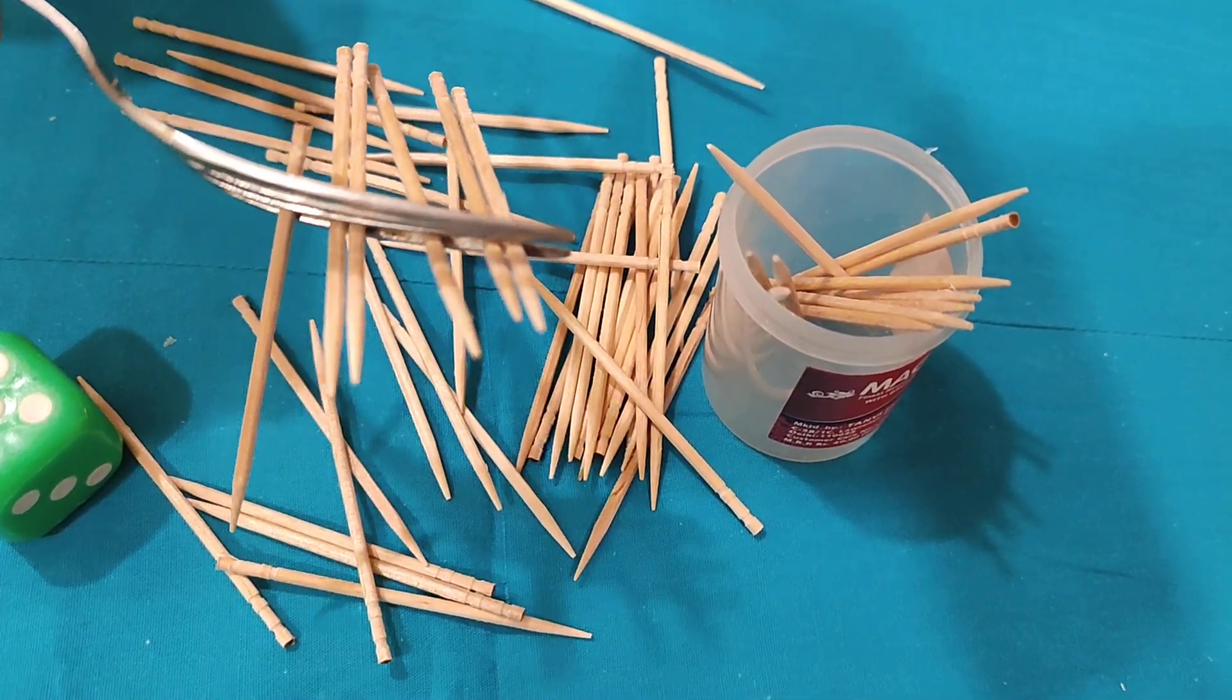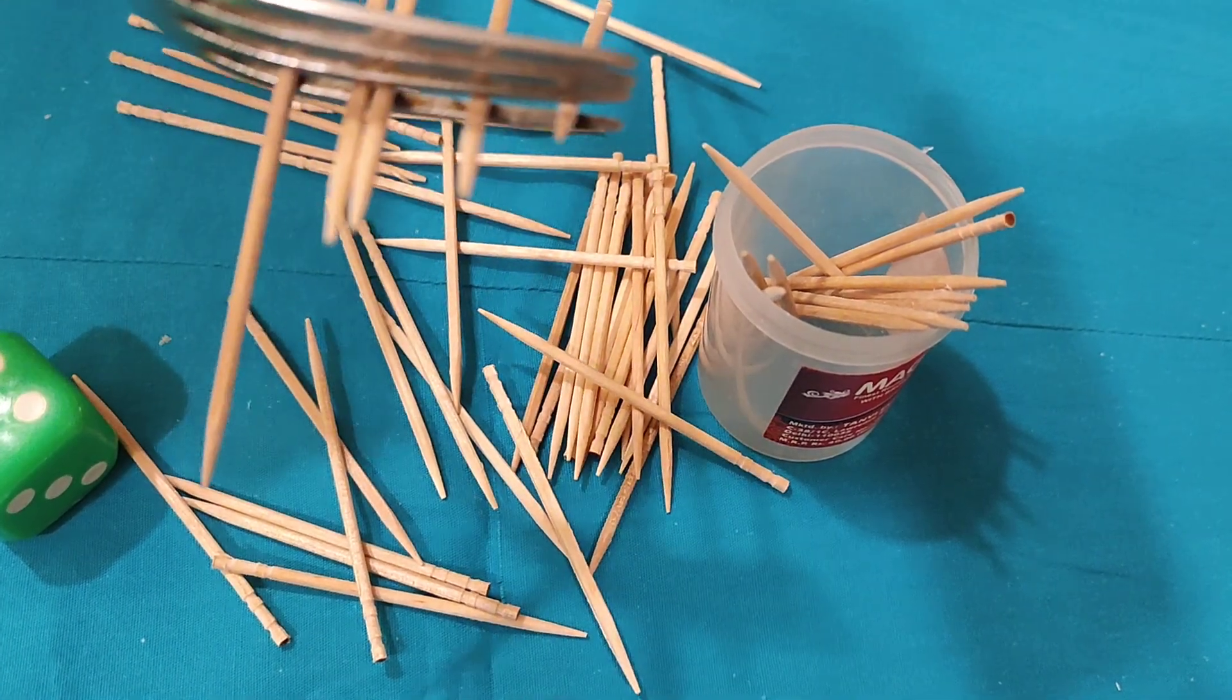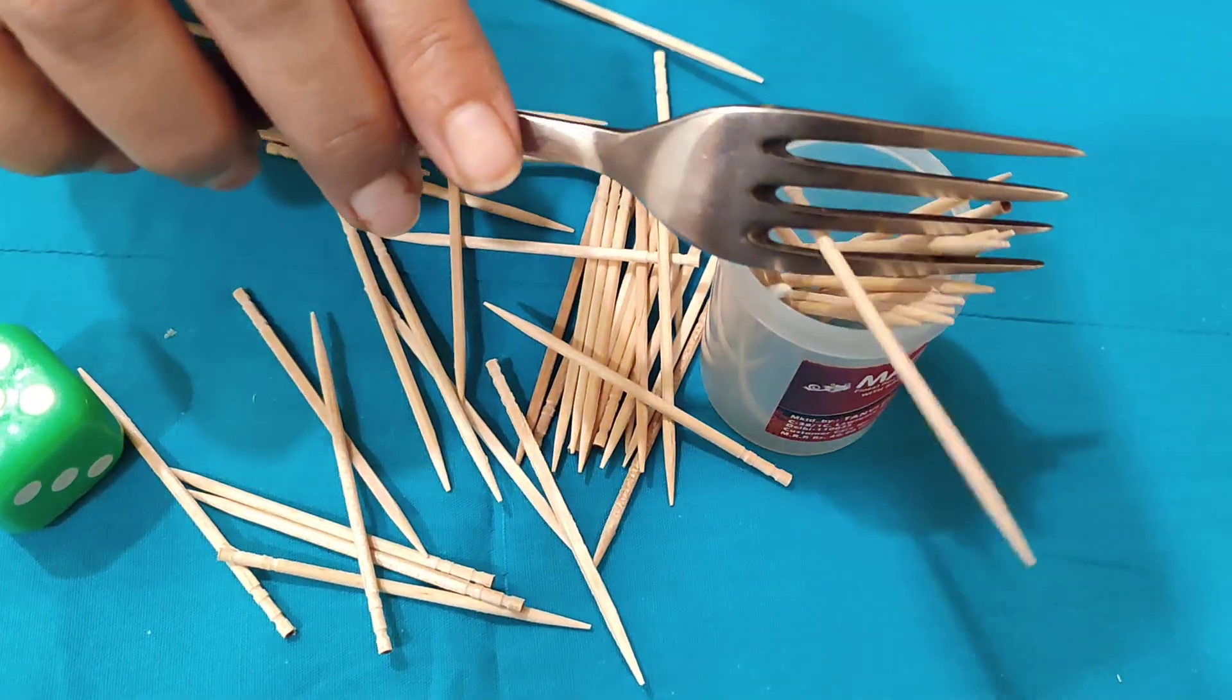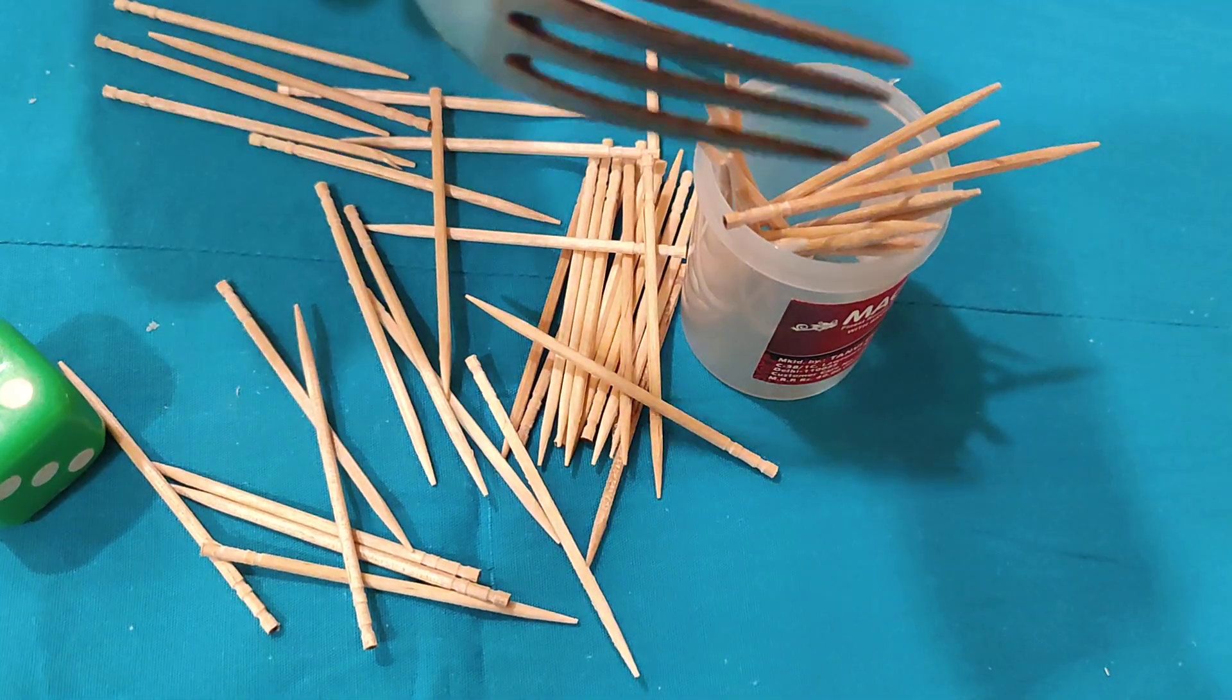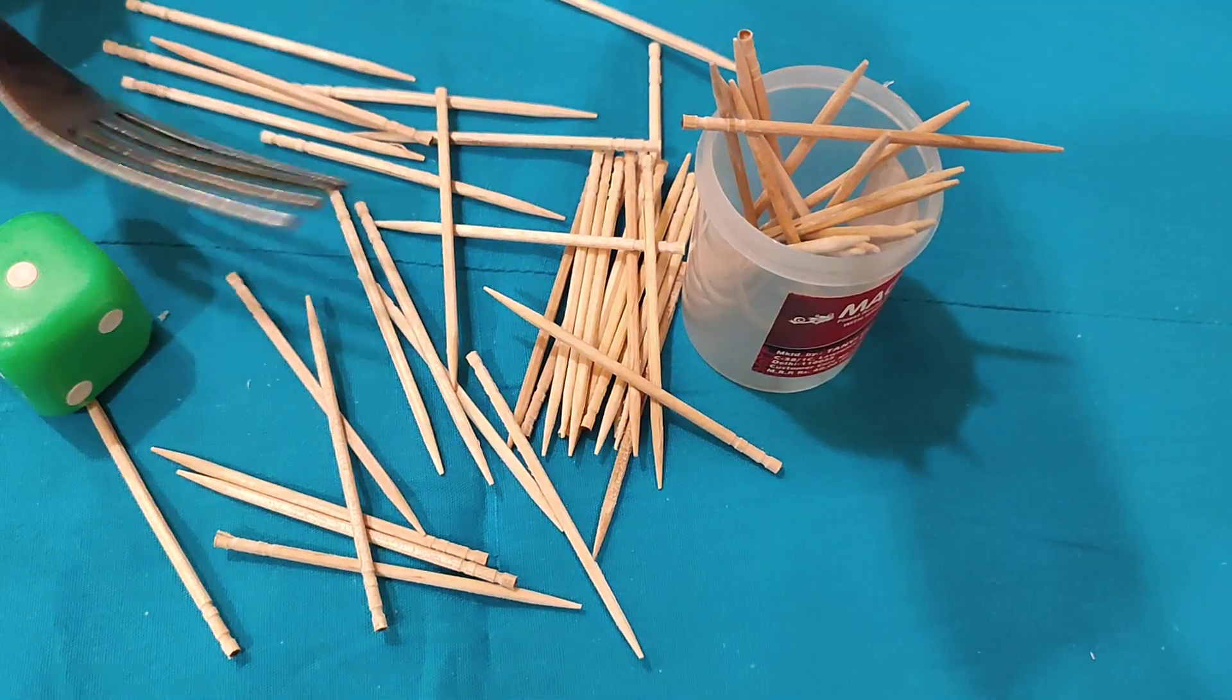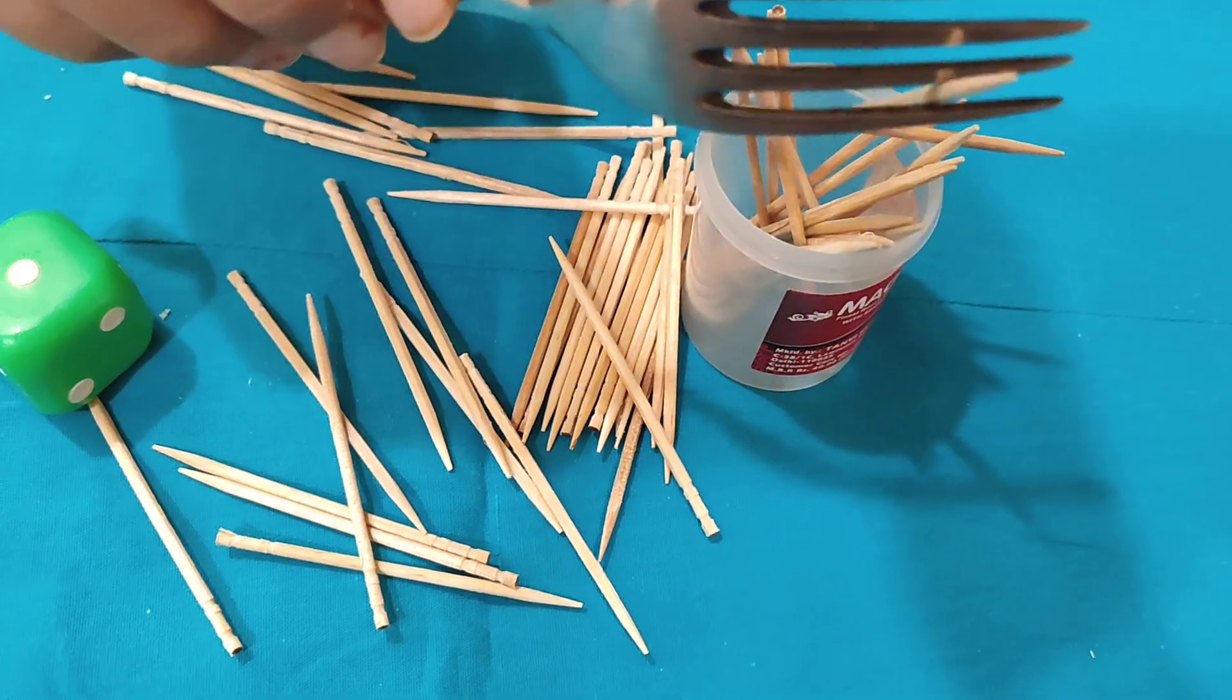1, 2, 3, 4, 5. Now I will roll the dice again. I rolled and have to place the toothpicks carefully on the fork. You can see I'm continuing to balance them.